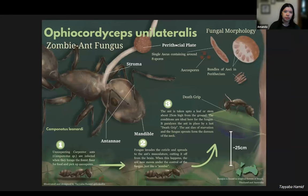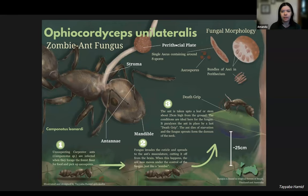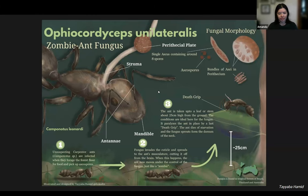One particular fungus, Ophiocordyceps, is known as the zombie ant fungus because it alters the behavior of its ant host. Once infected, the fungi invade the ant's musculature and force it to climb high in the jungle canopy. The ant's final act is to bite down on a piece of vegetation, effectively locking it in place. Then the fungi burst through the neck of the ant, growing the fruiting body that releases spores into air currents. Because it's high up, it's in a great position to expel spores over a wider range and repeat the cycle.